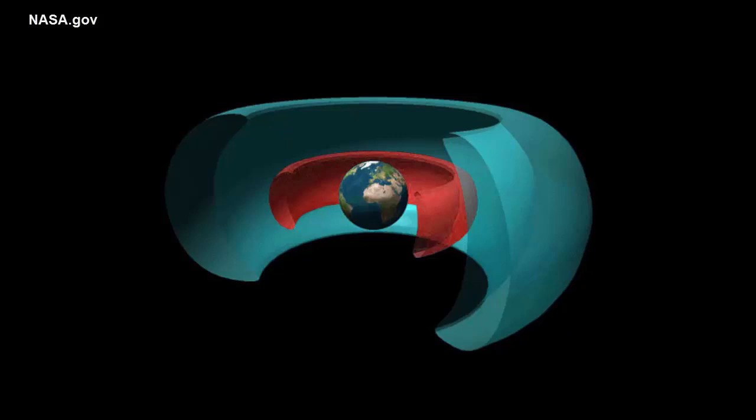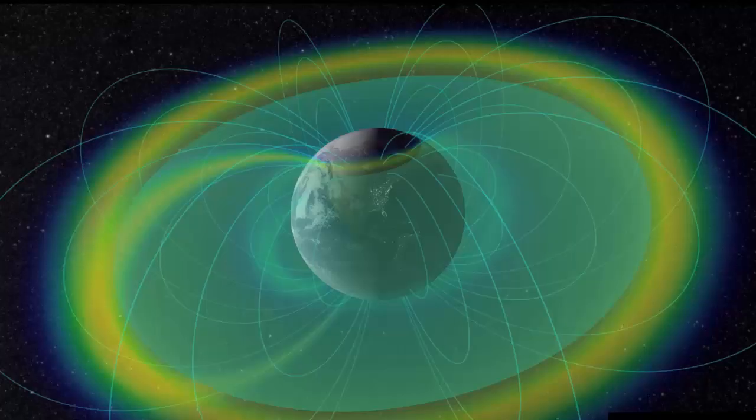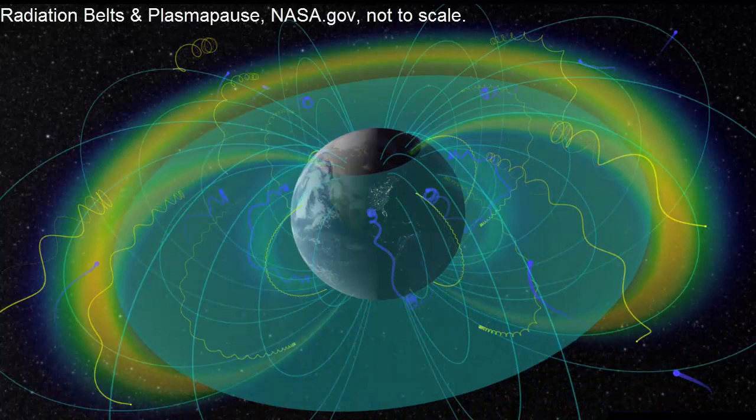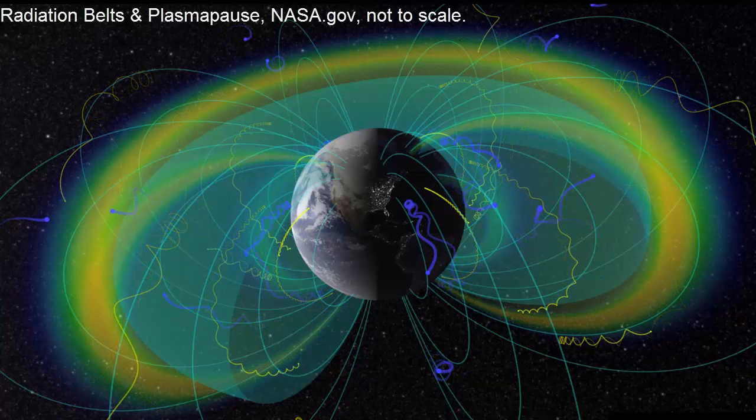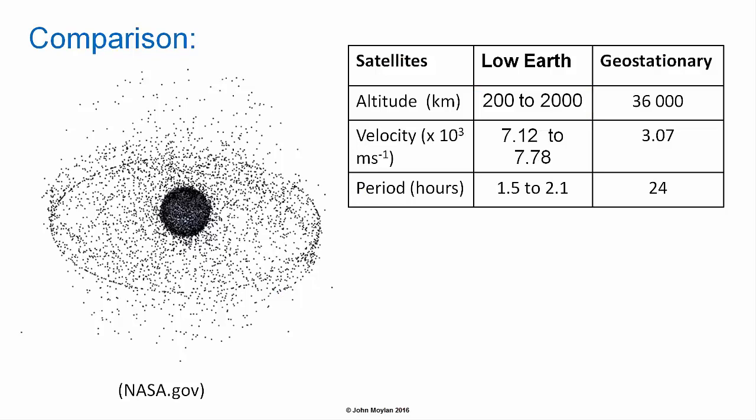The charged particles making up the inner Van Allen belt are believed to result from the bombardment of the Earth's outer atmosphere by cosmic rays from outside the solar system, whereas the particles making up the outer Van Allen belt mainly come from the solar wind. These particles spiral back and forth along the Earth's magnetic field lines, being reflected near the poles where the magnetic field is more intense. Satellites orbiting within the Van Allen belts must be specially designed to account for this radiation.